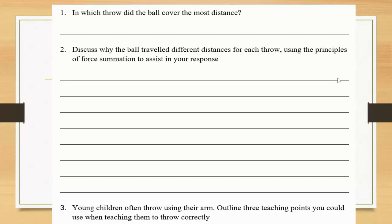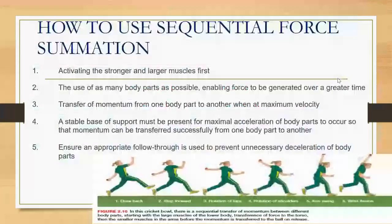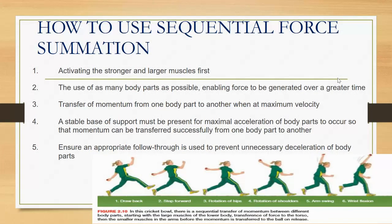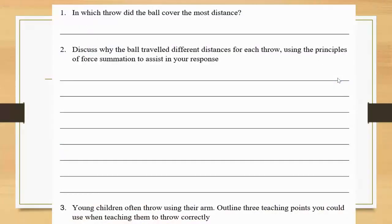Young children often throw using their arm. Outline three teaching points you could use when teaching them to throw correctly. Very simply, you'd be looking at teaching them these teaching points here: activating the stronger and larger muscles first, use as many body parts as possible which enables force to be generated over a greater period of time, the timing is important, transfer the momentum from one part to another when it's at its maximum peak, and you need a stable base of support. Any of those things would have been acceptable in that last question.